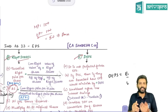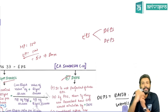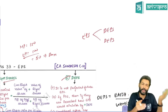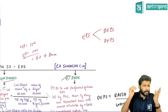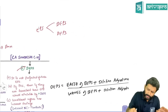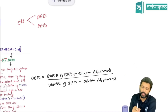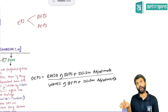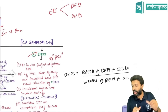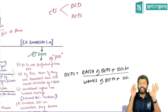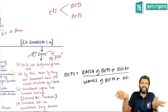There are two types of EPS: basic EPS (BEPS) and diluted EPS (DEPS). What we calculated so far is BEPS. For DEPS, take EISH and add dilution adjustment; take WANES and add dilution adjustment. Diluted EPS calculation is only necessary if the company has potential ordinary shares (POS). POS are instruments which are currently not equity shares but may become equity shares in future — like convertible preference shares, convertible debentures, share warrants, etc. If there are no POS, BEPS and DEPS will be the same.